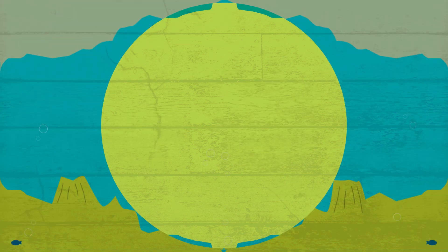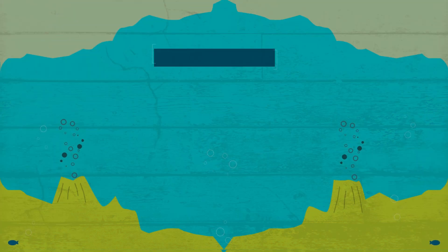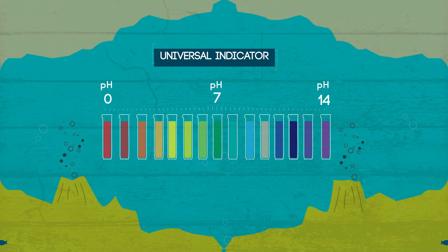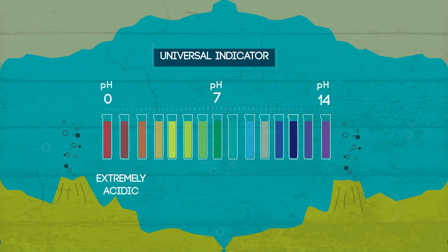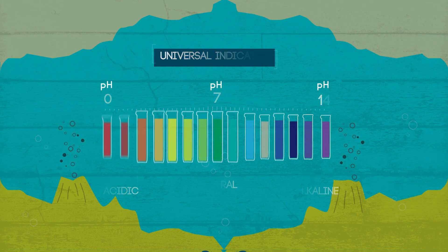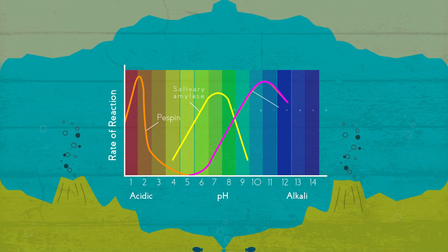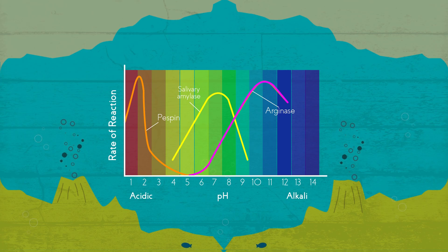Another important variable is pH. A pH level which is either too high or too low for a particular enzyme can lead to a change of protein structure. Different enzymes will have different optimal pHs, which depend upon where the enzyme normally works. For example, pepsin works in the acidic stomach and so unsurprisingly has an optimum pH of 2.